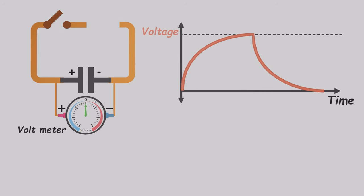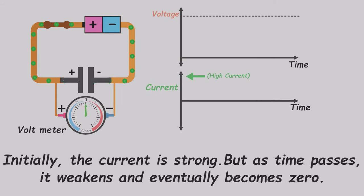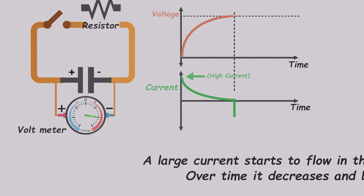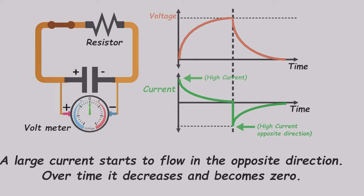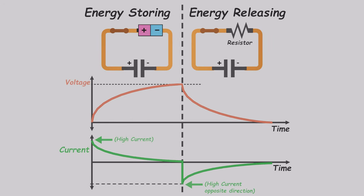Now let's consider the current. In the beginning, the current is high. However, as time progresses, it diminishes and eventually reaches zero. If we disconnect the battery and connect the two ends of the capacitor through a resistor, a significant current starts flowing in the opposite direction. Over time, this current diminishes and becomes zero. Here, voltage behaves similarly to the membrane force, as seen in the earlier example. Similarly, current behaves like the water flow in the analogy.